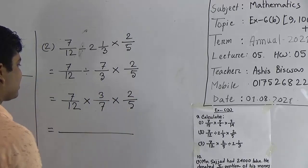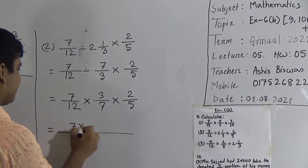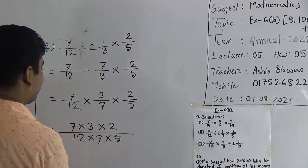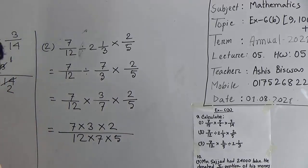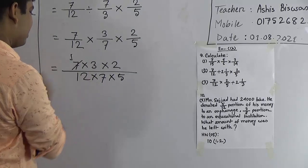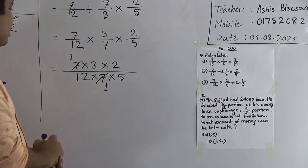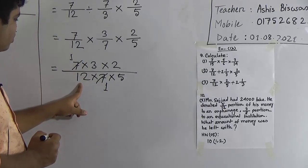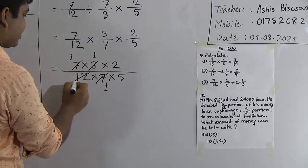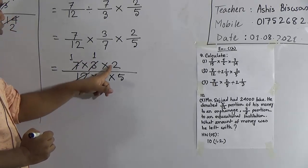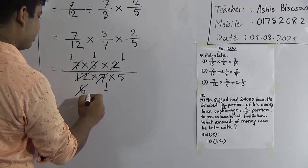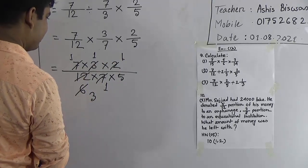Now we convert these 3 fractions into one fraction: 7 × 3 × 2 over 12 × 7 × 5. Now we do cancellations. Here 7 and 7 — both are divided by 7, giving 1 and 1. And 3 and 12 — both are divided by 3, giving 1 and 4. Now 2 and 4 — both are divided by 2, giving 1 and 2.